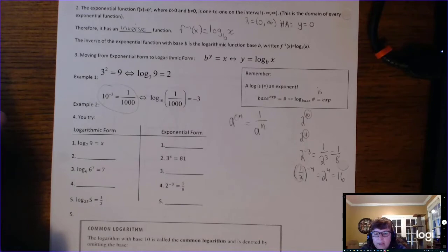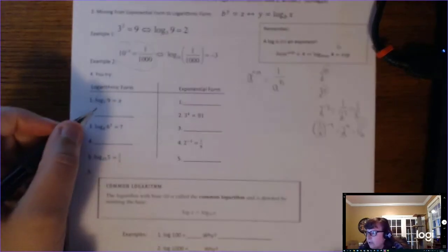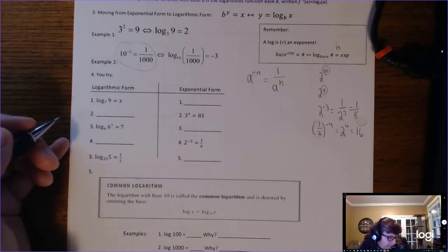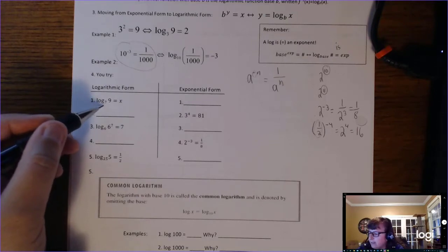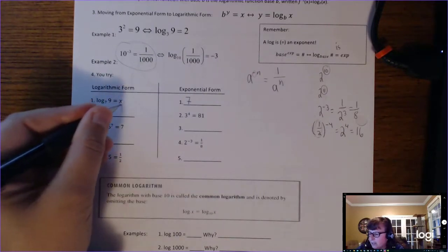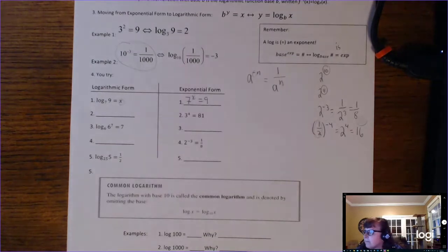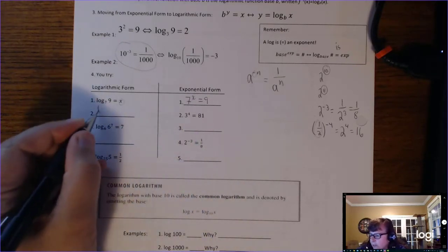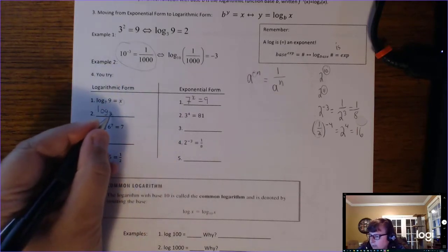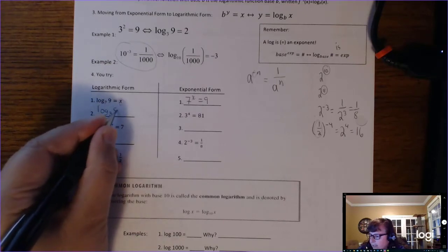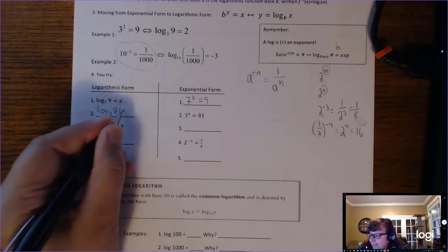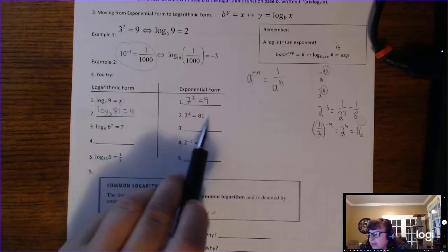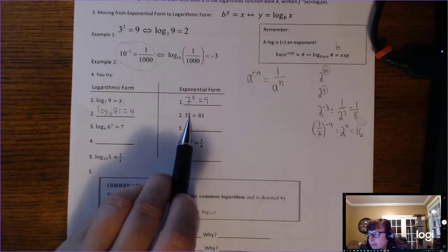That's how you go from exponential form to log form. If we have log base 7 of 9 equals x and want to rewrite in exponential form: the base is 7, the exponent is on the other side of the equals sign, so 7 to the x equals 9. For 3 to the 4th equals 81 in log form: log base 3 of 81 equals 4. The log base 3 of 81 is the exponent — a log is the exponent, talking about 81 in terms of 3 to the 4th.